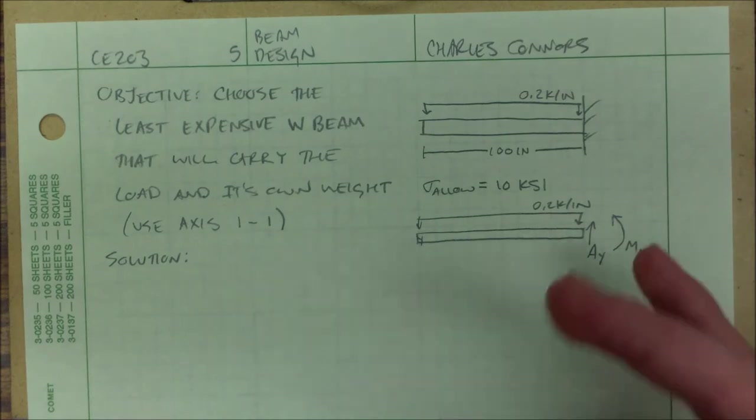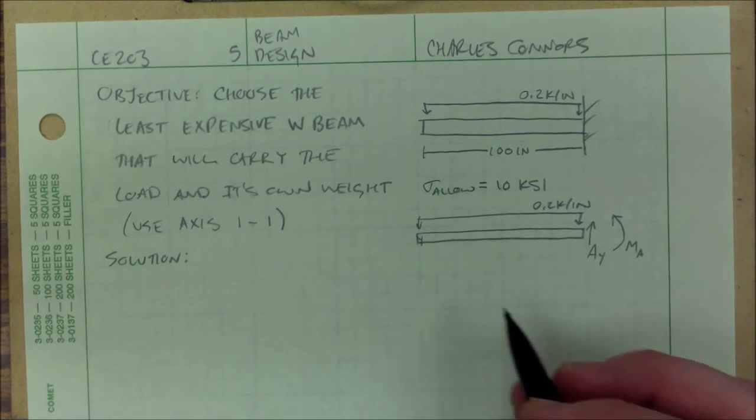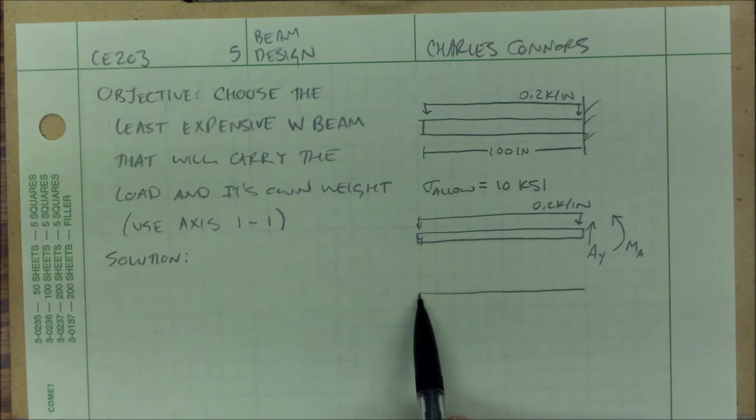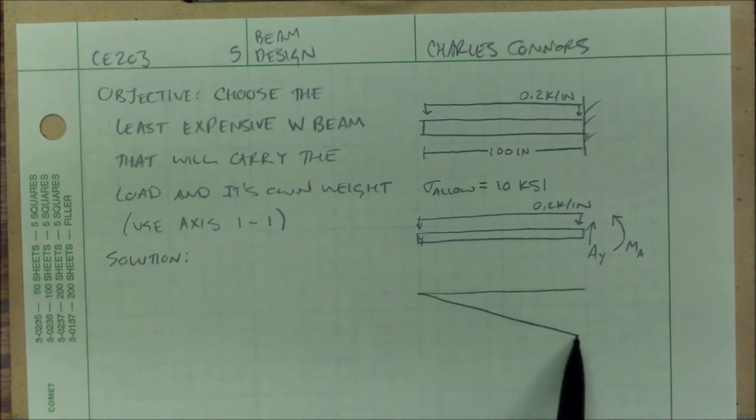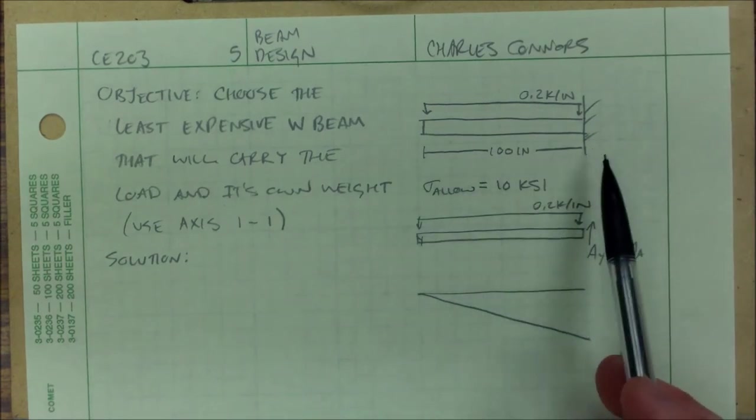This is going to be really... I draw my shear and moment diagram just so that I can know what my max moment is. I could do this real quick, just because it's a really easy situation. My shear starts at 0, and it's going to go down at a rate of 0.2 kip per inch along my 100 inches.